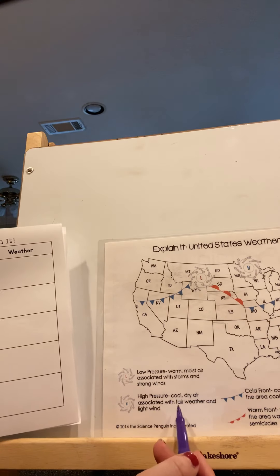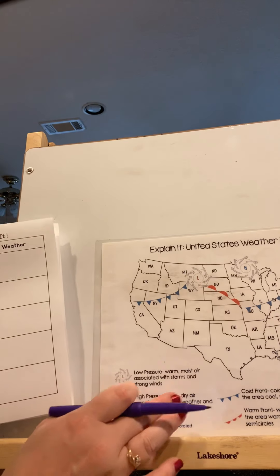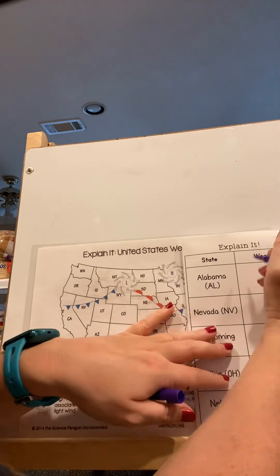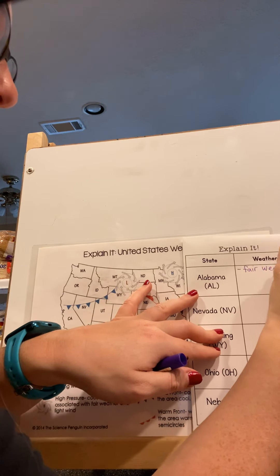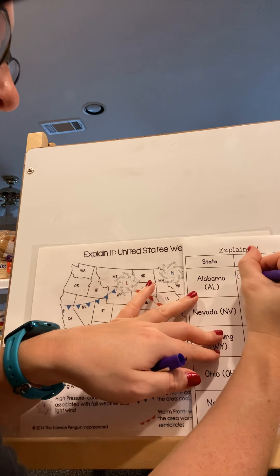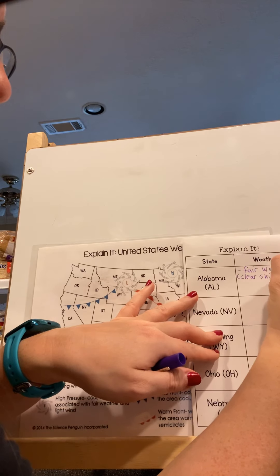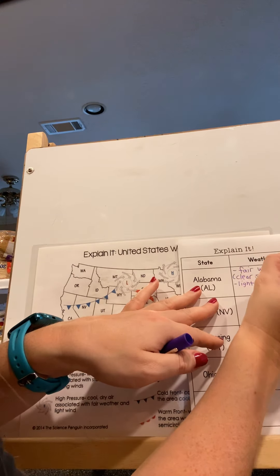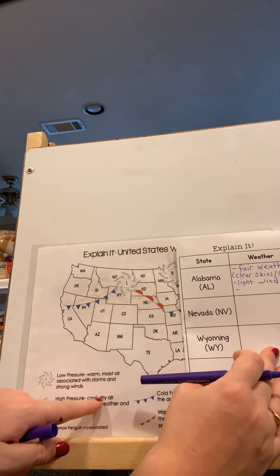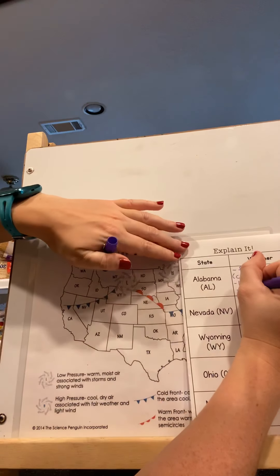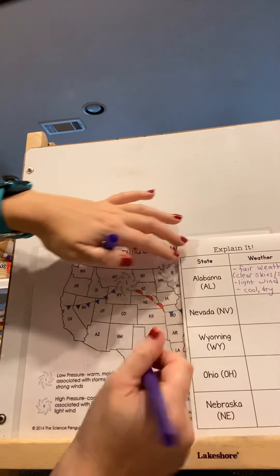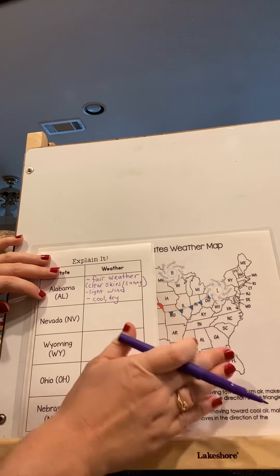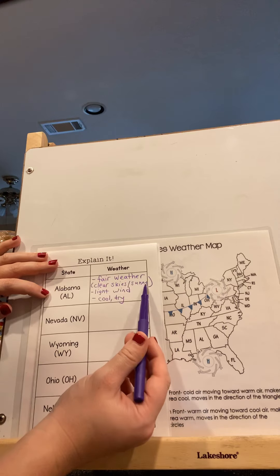The reference guide says cool, dry air associated with fair weather and light wind. Now I don't want you copying this word for word — this is a summary. For Alabama, I would say there was fair weather, which means clear skies and maybe sunny, light wind, and cool and dry. I need you to make some sense of it, not just copy every word. Alabama has a high pressure system, so right now it's probably fair weather, clear skies and sunny, light wind, cool and dry.